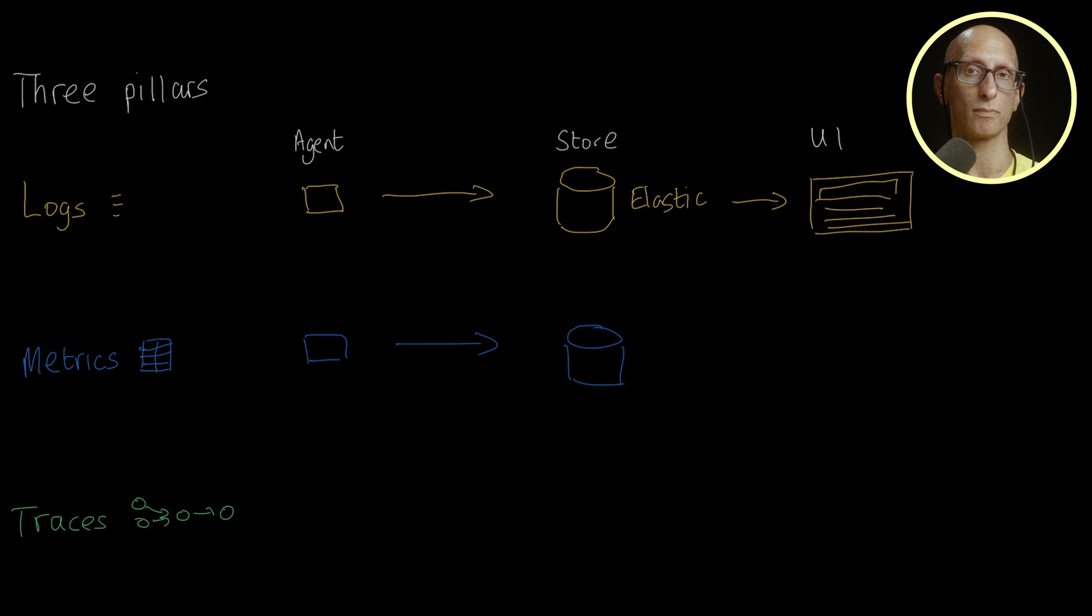And again, we need to store those metrics somewhere, likely a metric store like Prometheus. Metric stores typically enforce sampling and pre-aggregations using counters, histograms, and gauges. And we need a UI for this data as well, perhaps something like Grafana.